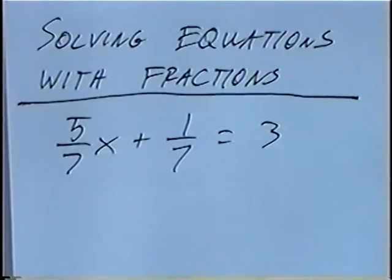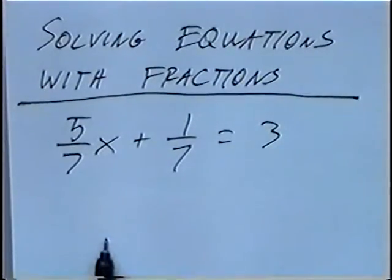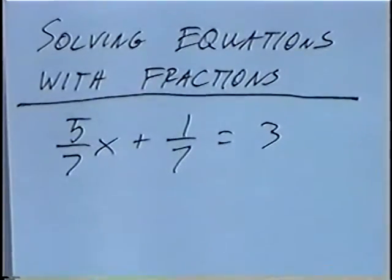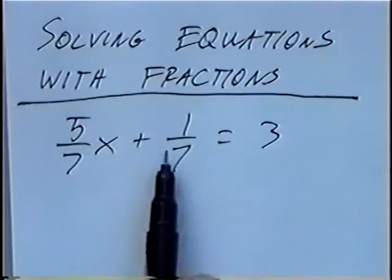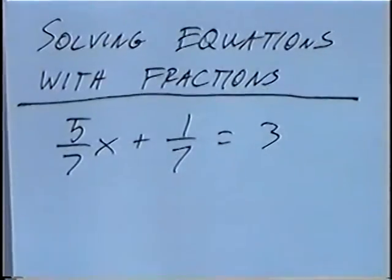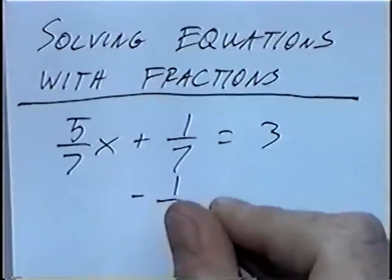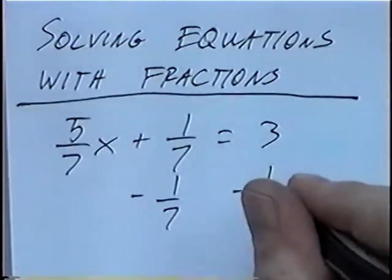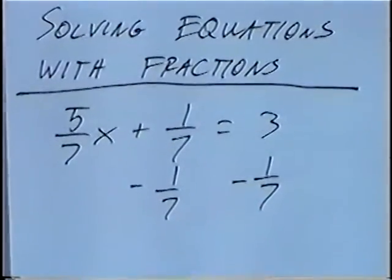Solving this equation, we want to get x by itself, so our final answer would be x equals the answer. We're going to leave x on the left-hand side. We can get rid of the fraction plus 1 over 7 by doing the opposite, which is minus 1 over 7, and we'll do that to both sides of the equation.